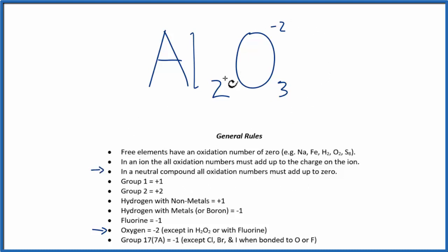So if I look at these oxygens, 3 times minus 2, I have a minus 6 for all of the oxygens. That means the aluminum is going to have to be plus 6 for these to add up to give me a neutral compound, to be 0.